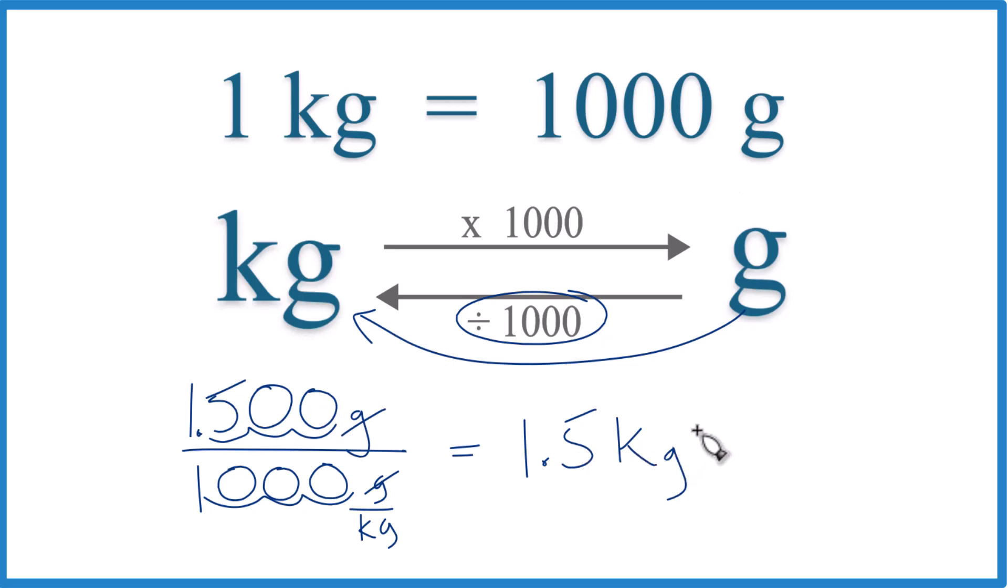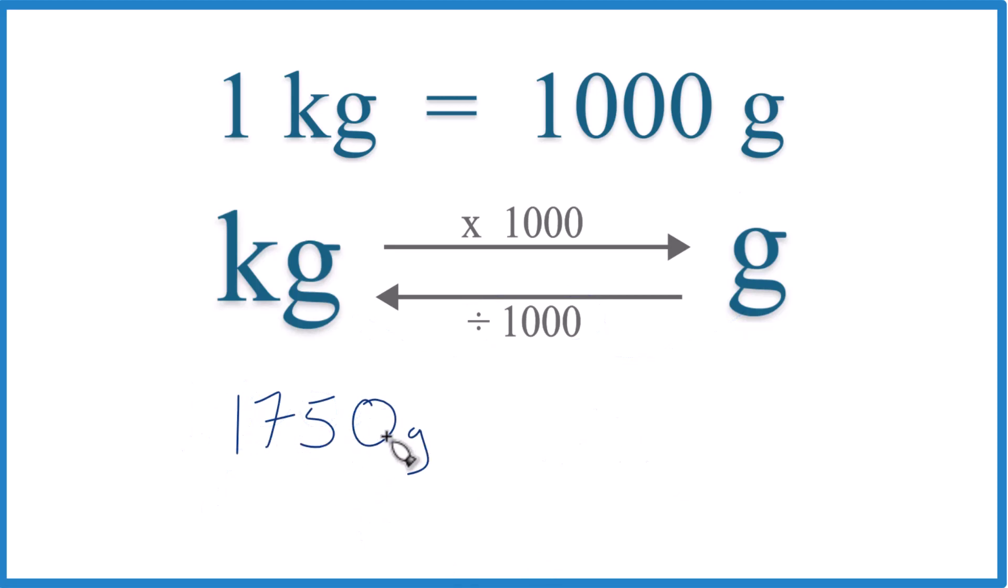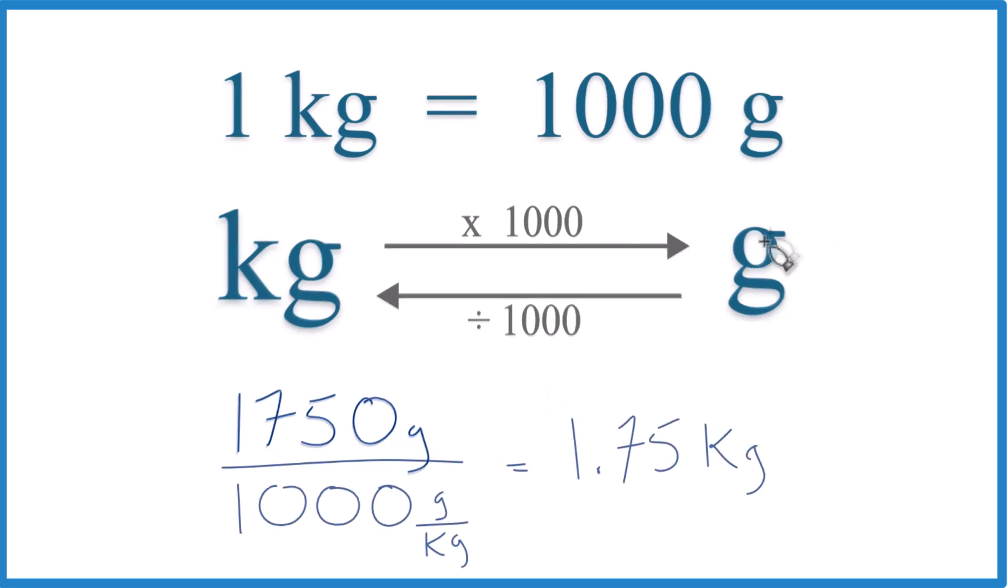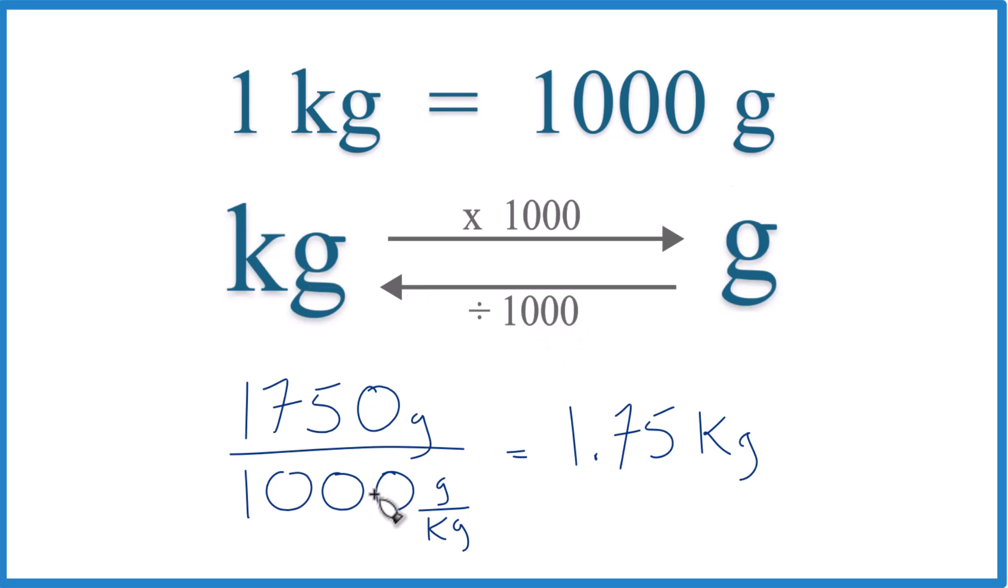Okay. So pause and give this one a try. Convert 1,750 grams to kilograms. Grams to kilograms, divide by 1,000. We have grams on the top and the bottom. They're gone. Move over one, two, three. And we get 1.75 kilograms. We don't really need this extra zero here. That's it.